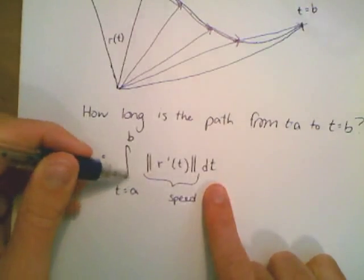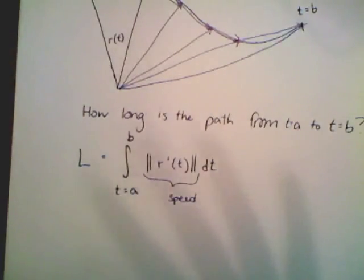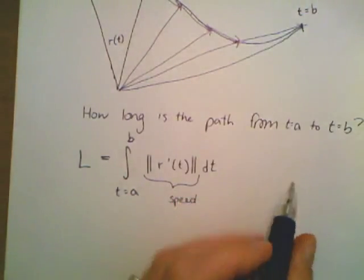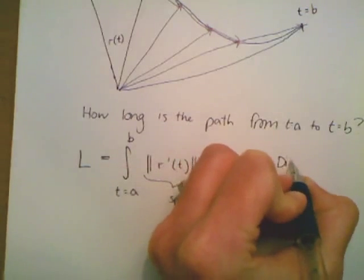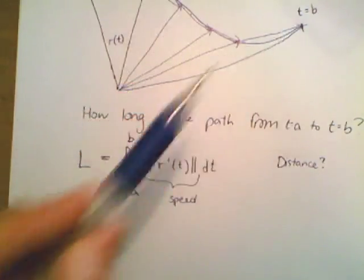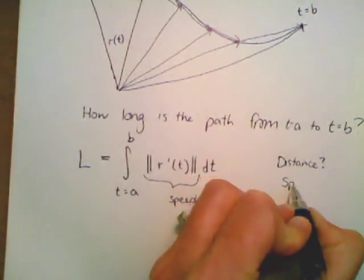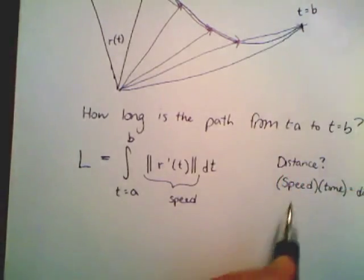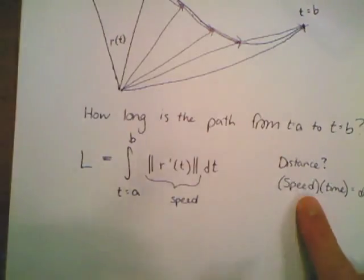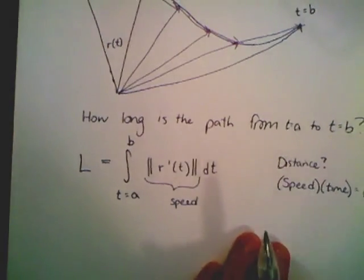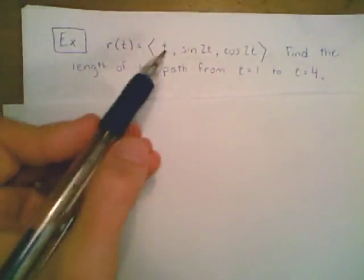If we think of r of t as position, then r prime of t gives velocity vectors. What I'm doing is summing up a whole bunch of speeds over particular units of time. Conceptually, distance equals speed times time — and that's exactly what's happening here. I'm summing up instantaneous speeds over a collection of times, which gives the total distance traveled. Let's see an example.